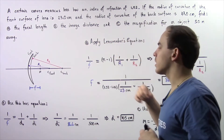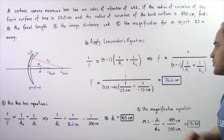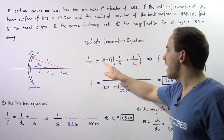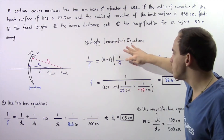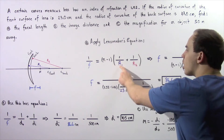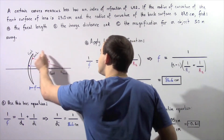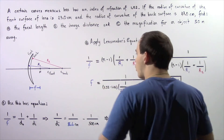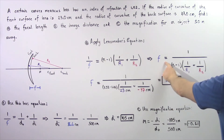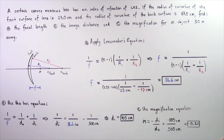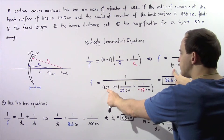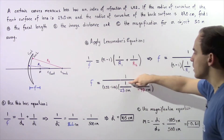Let's begin with part A and apply the lens maker's equation, which states: 1 divided by the focal length F equals the product of (N minus 1) and (1 divided by R1 plus 1 divided by R2), where N is the index of refraction. Rearranging, the focal length equals 1 divided by that product. Plugging in our known values: N is 1.52, so 1.52 minus 1, multiplied by 1 divided by...